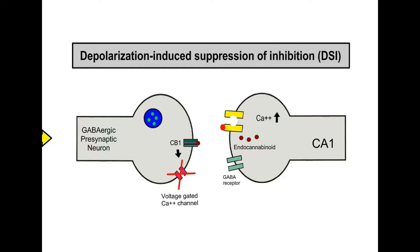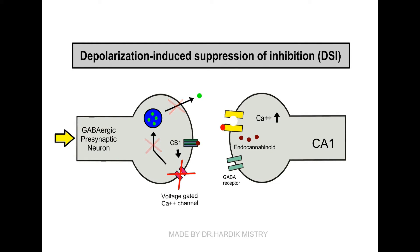When high-frequency stimuli arrive at the GABAergic presynaptic terminal, it cannot open voltage-gated calcium channels, so calcium ions cannot enter inside the presynaptic terminal and GABA-filled vesicles are not released at the synapse. This event is known as depolarization induced suppression of inhibition, which helps in maintaining long-term potentiation for a longer duration of time.